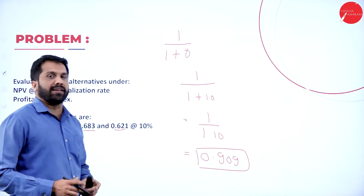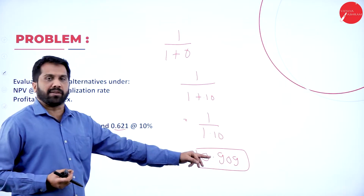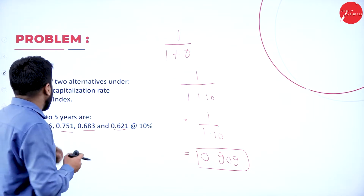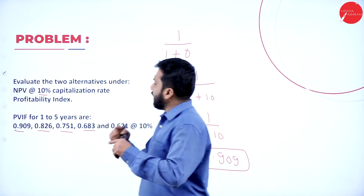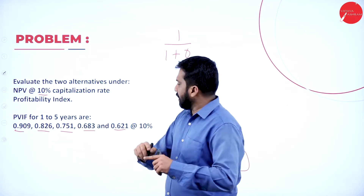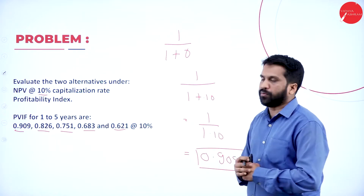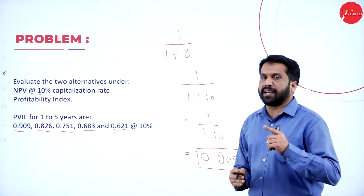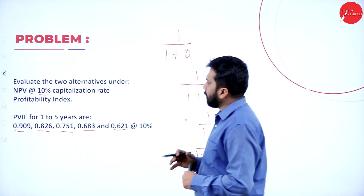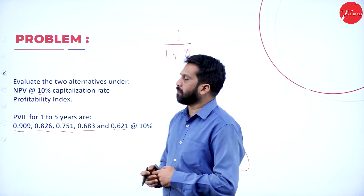If you are using a calculator, after getting 0.909, just press equals and you will get 0.826. Again equals gives 0.751, equals 0.683, equals 0.621. All 5 years you can calculate in the calculator itself. But no need to calculate — it will be given in the question paper itself.